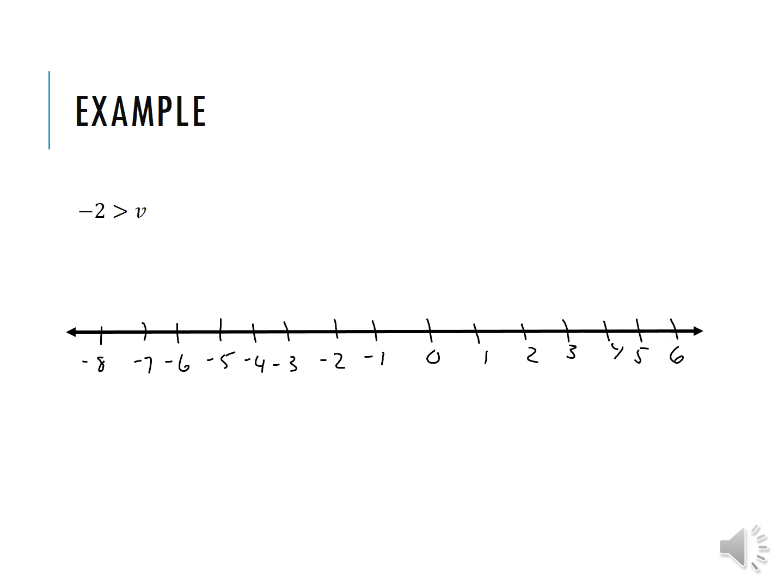We should have an open circle at negative 2 and again we're going to the left because we need to test numbers. Negative 2 is greater than negative 3. It is not greater than negative 1. So the arrow should be going to the left.